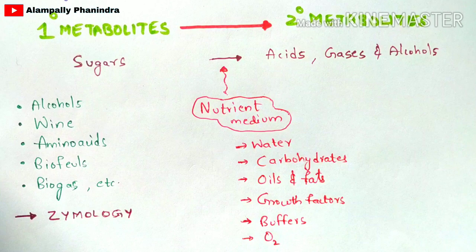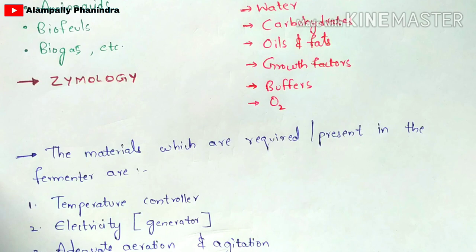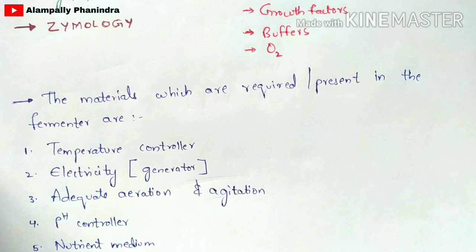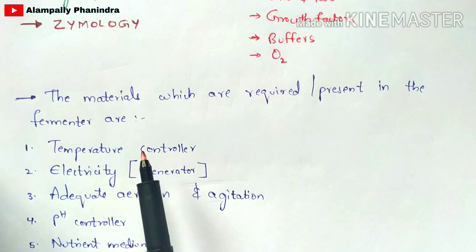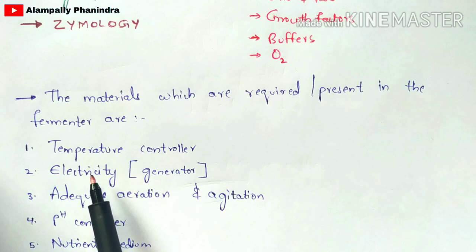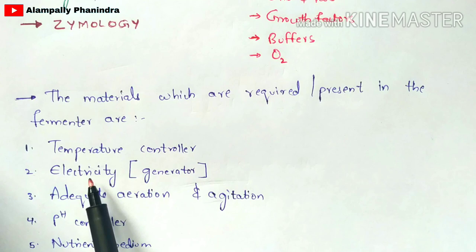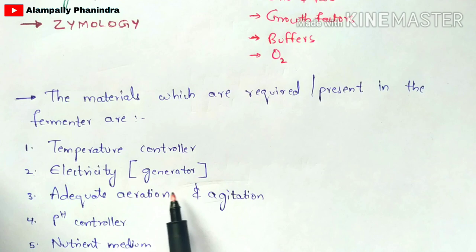Now let us discuss the materials present in the fermenter. First is the temperature controller, which is used to control temperature, since different secondary metabolites require different temperatures. Second is electricity, which is also required. The generator should be connected to the main board, because if the power cuts, the formation of secondary metabolites will not occur properly.